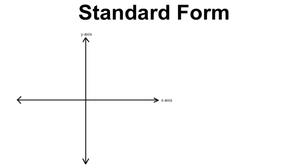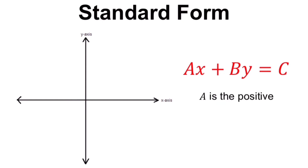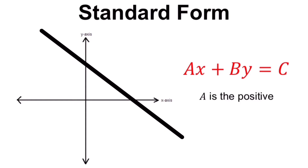The standard form has the formula ax plus by equals c. We remember that our a should always be positive. This standard form is generally used to determine the x and y intercepts of a line — where the line touches the y-axis and the x-axis. We also use this standard form in solving systems of equations.